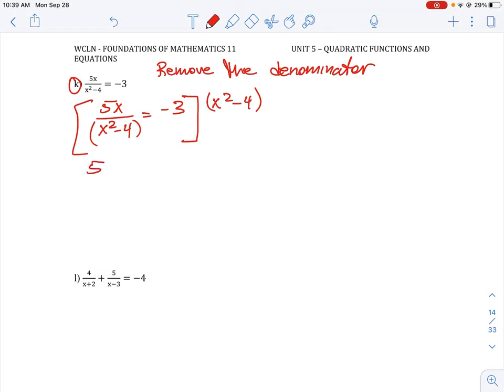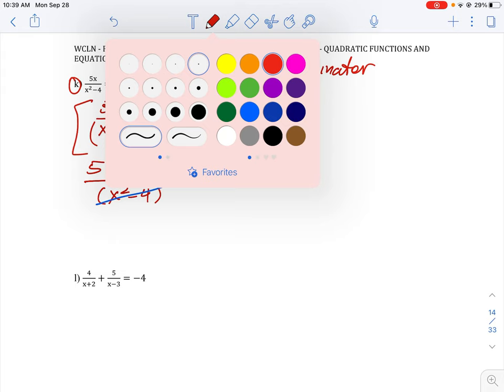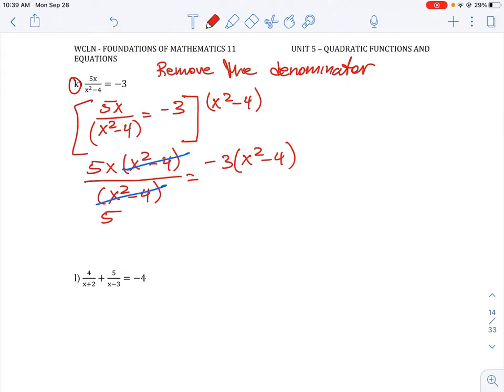So if we expand this, we will have 5x times x squared minus 4 all over x squared minus 4 is equal to negative 3 times x squared minus 4. So this will have two terms that we can cancel, and then our resulting equation is just going to be 5x is equal to negative 3x squared minus 4.